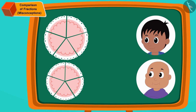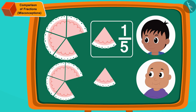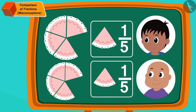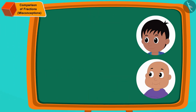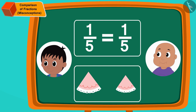Let us first look at the cake that Rajoo and Babloo got in the form of fractions. Rajoo got one piece out of five equal pieces of Appu's cake, hence Rajoo got one-fifth part of Appu's cake. Babloo got one piece out of five equal pieces of Chanda's cake, so Babloo got one-fifth part of Chanda's cake. The fractions of the cake that Rajoo and Babloo got are the same, but is the amount of cake they got also the same?